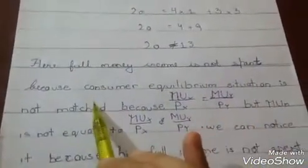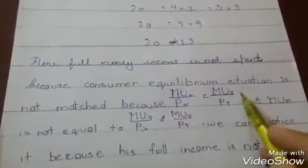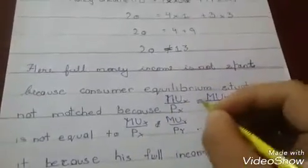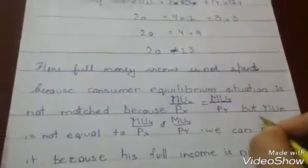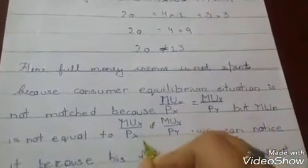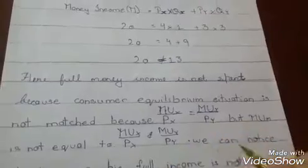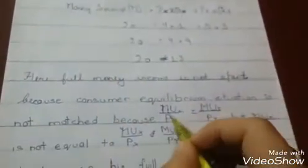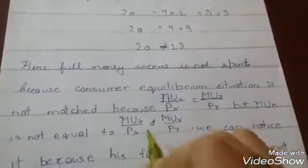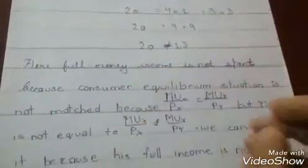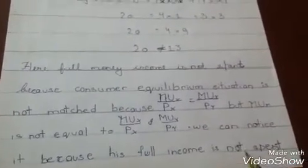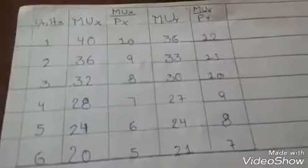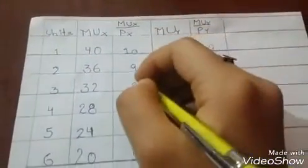Here full money income is not spent because consumer equilibrium situation is not matched. MUX upon PX is equal to MUY upon PY, but MUM is not equal to MUX upon PX or MUY upon PY. Here one condition was satisfied but MUM was not equal. We can notice that this is because his full income is not spent. So now let's look at the next case.